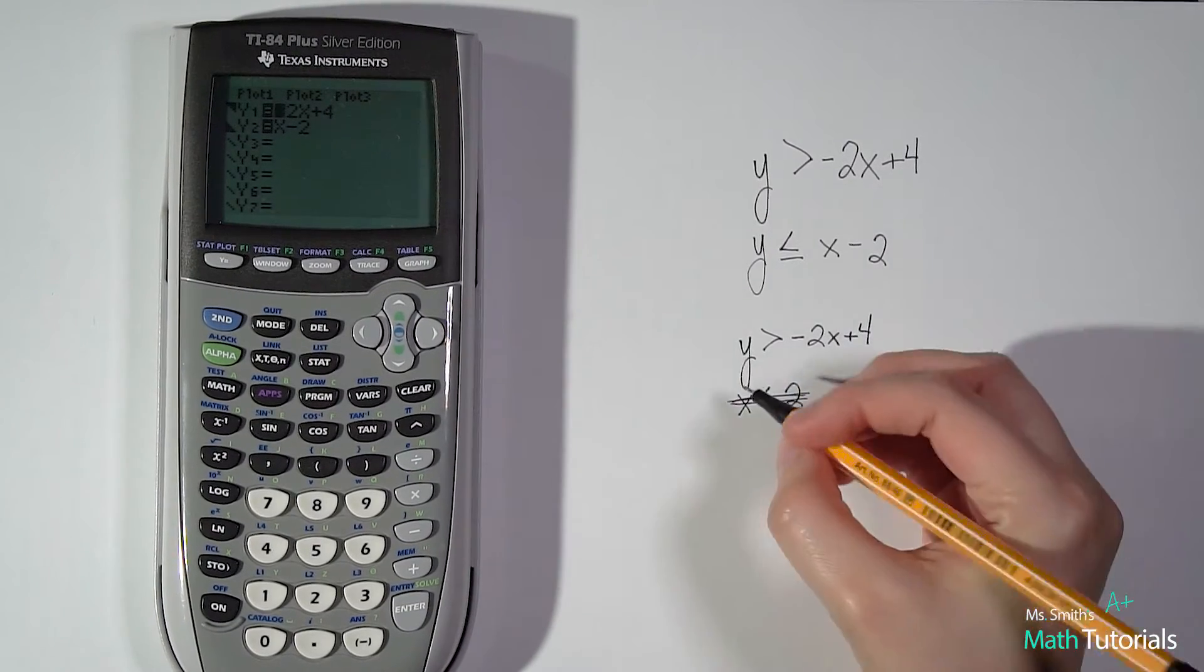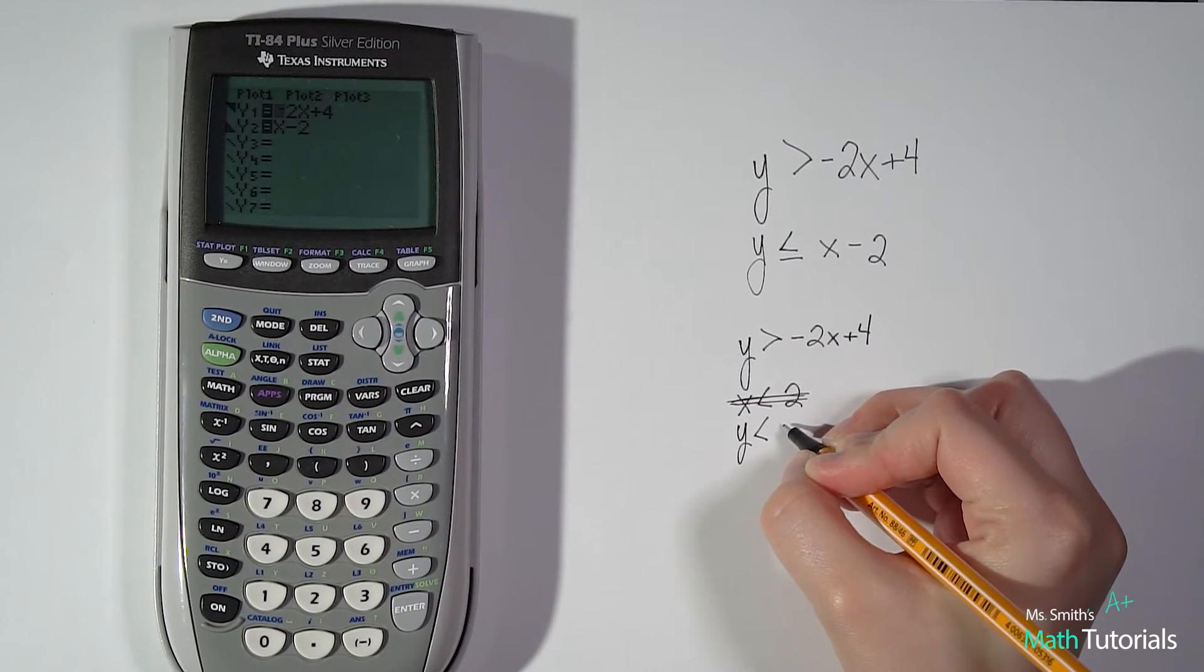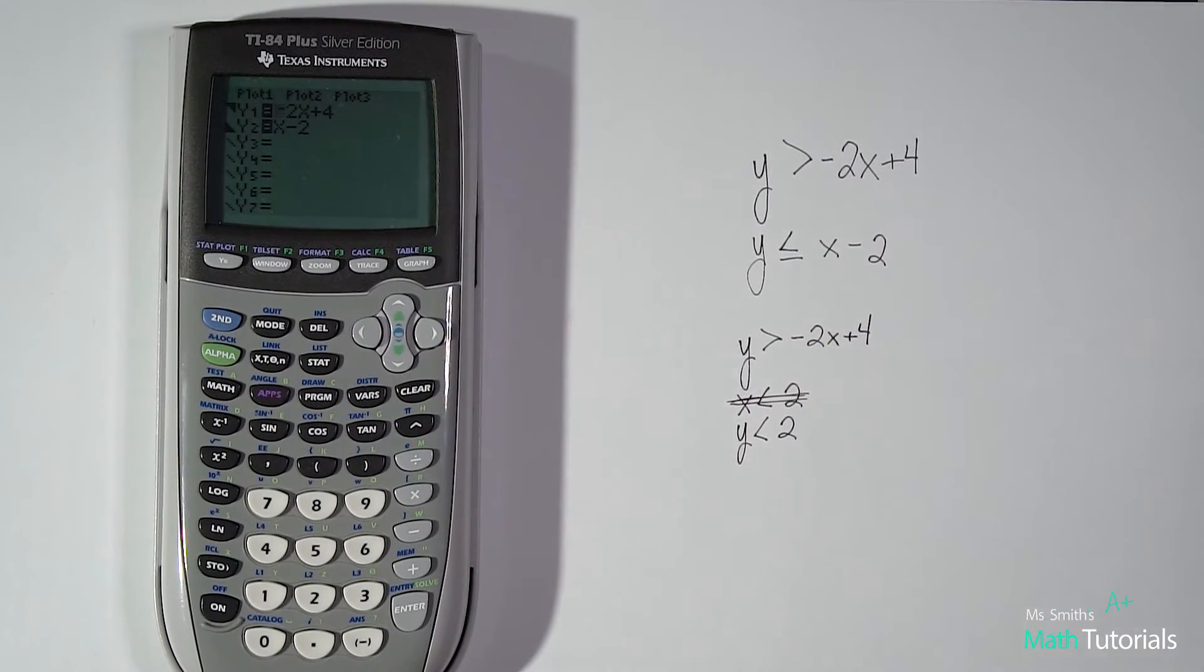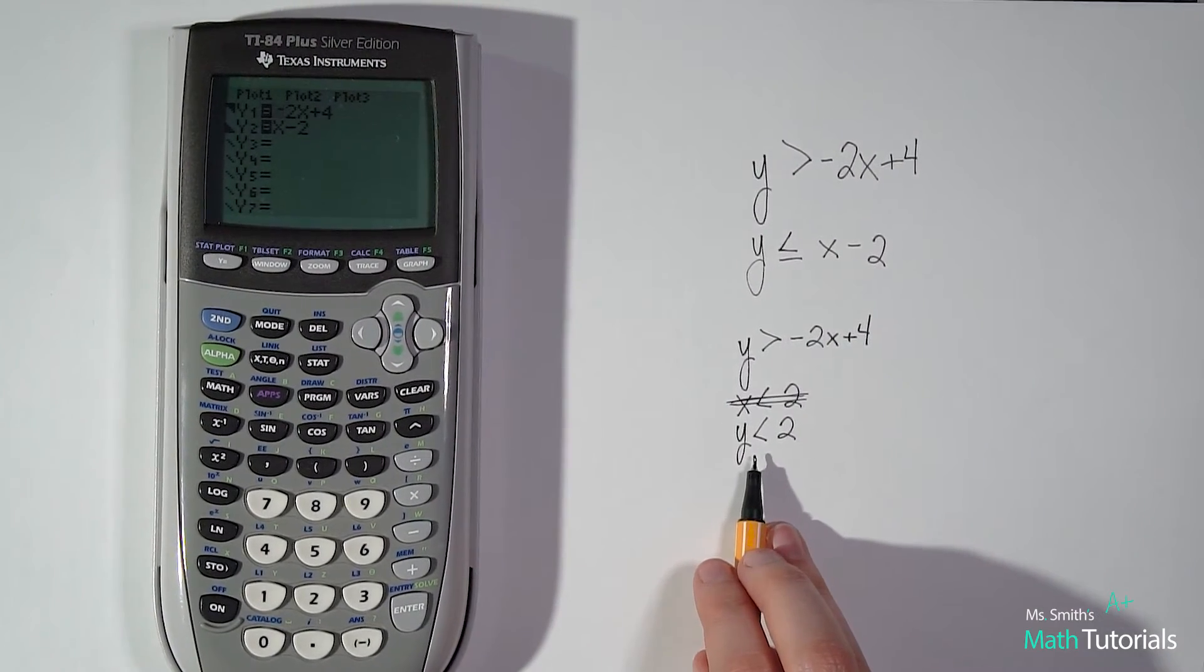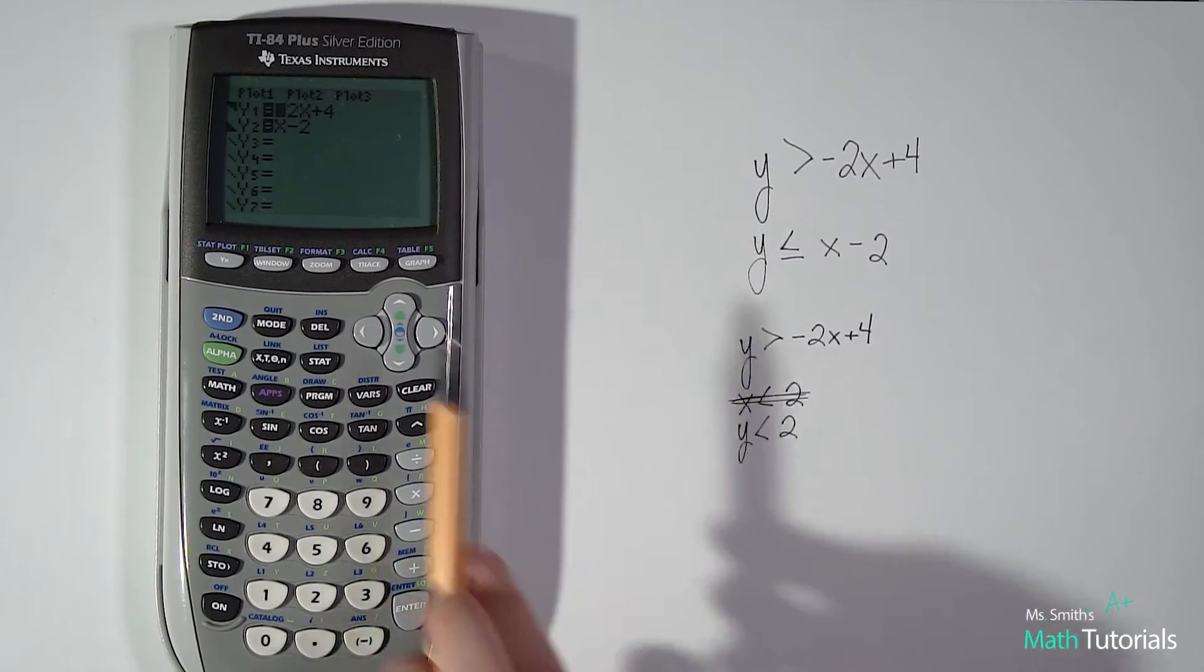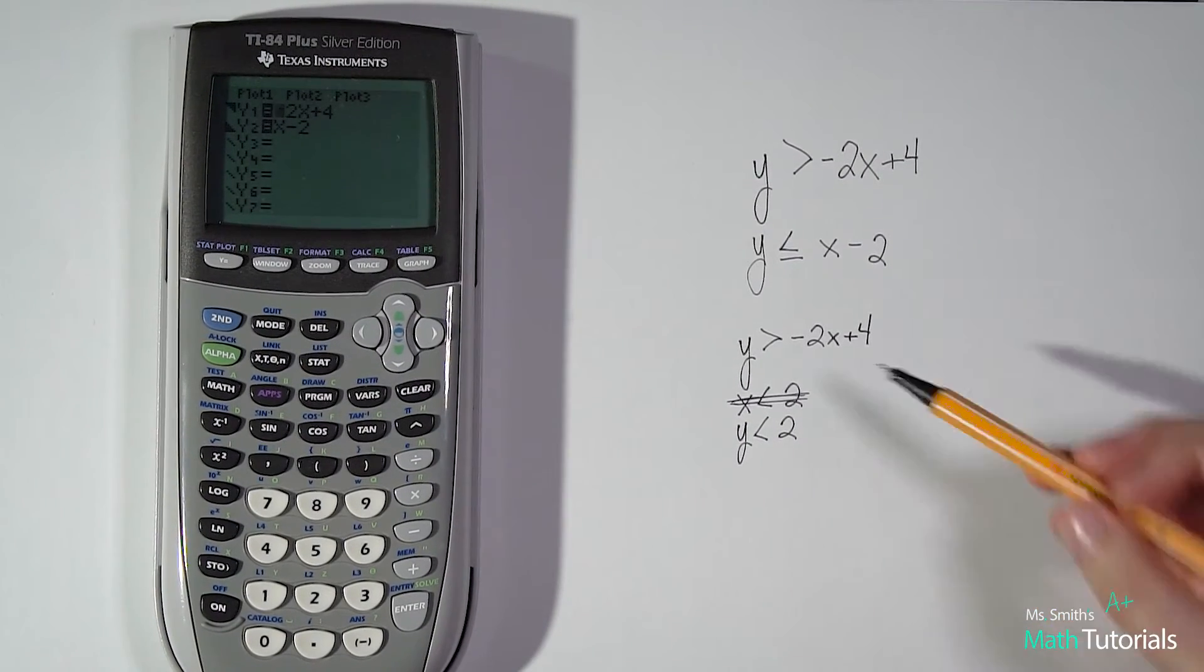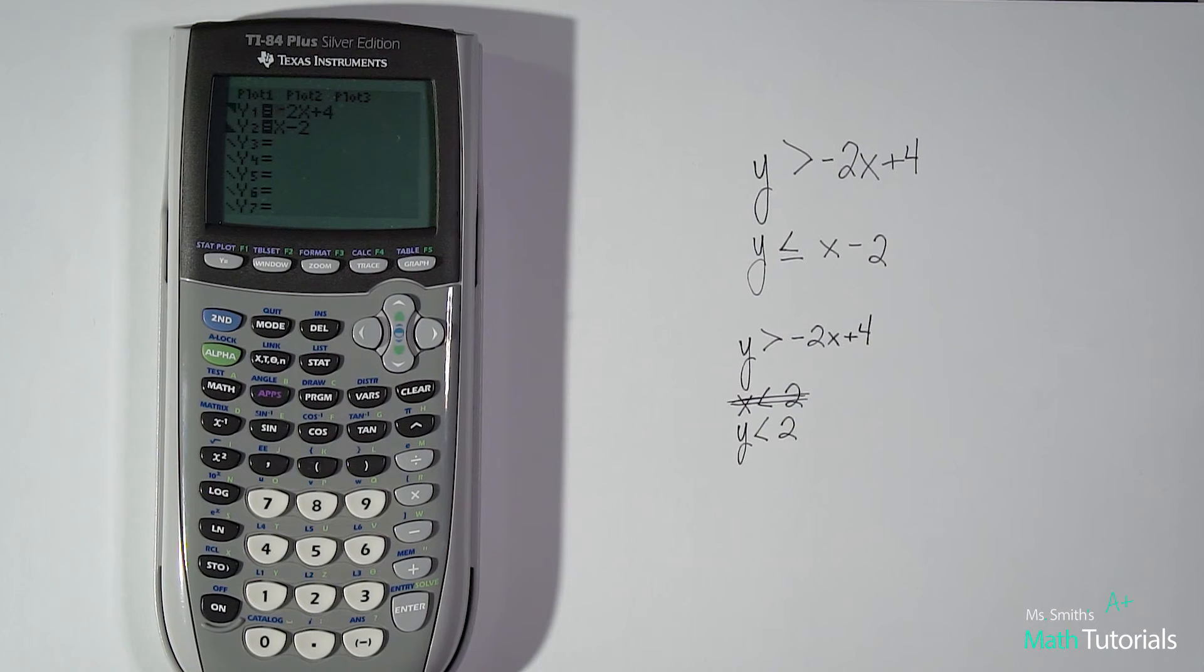Now, if it was one of these, let's say my second equation was y is less than 2, that I could graph. Okay, that would be a horizontal line. And because it's my y on the left side, that I could put in here. But just keep in mind, you'll have to know that would be a vertical line.